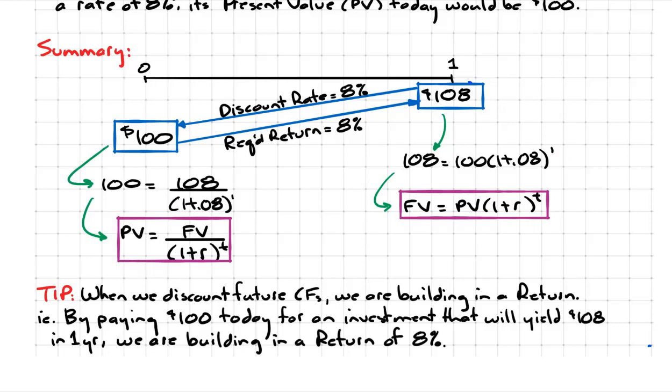So the 108 was derived as follows. Here's our initial $100. At the end of the year, we get our principal back plus interest, and this is for one period, so we just compound for one period. That's how we get 108.